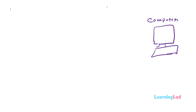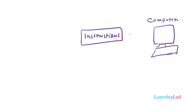These computers can't really do anything on their own. So for a computer to do something, one has to give instructions to it. These instructions contain step by step information to perform a specific task, and these instructions are called a program.